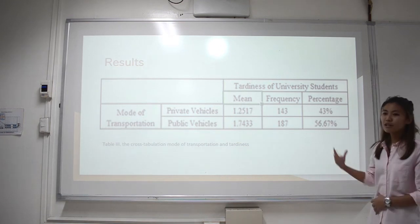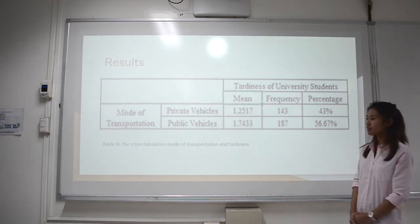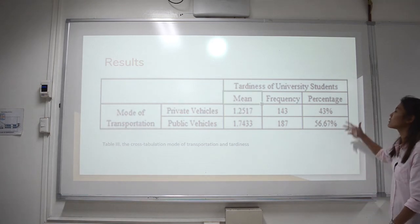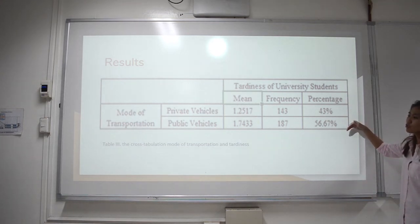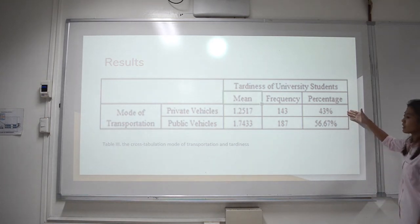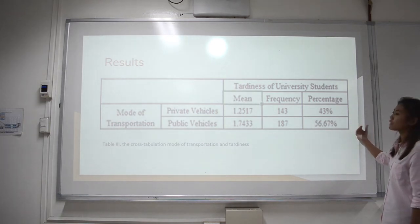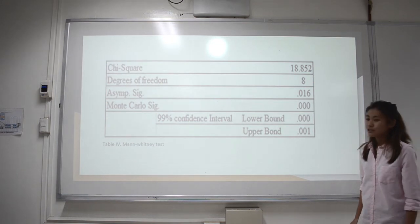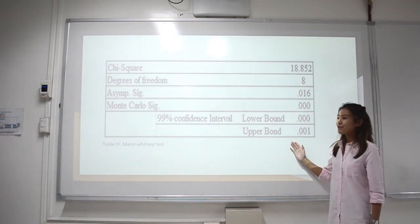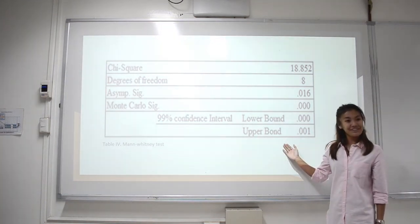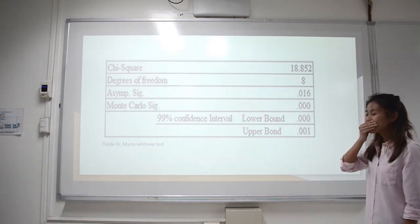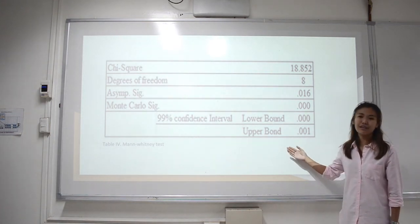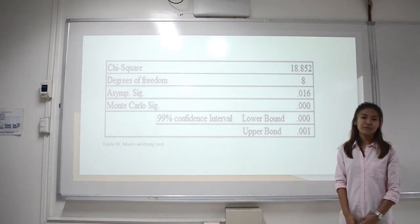Here in Table 3, we present to you the cross-tabulation of mode of transportation and tardiness. Here we can see the percentage of students using private vehicles and students using public vehicles. In this next table, we present to you the chi-square using the manual IT test. This test was run through an application called SPSS.